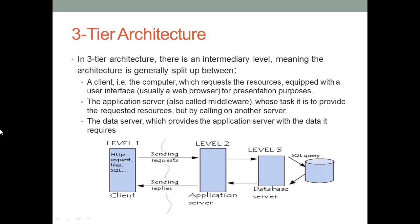In three-tier architecture, all requests from the client — whether SQL queries, HTTP requests, or file uploads — go directly to the middleware server. The middleware server decides whether to query the database. If needed, it sends the request to the database, the database executes the SQL queries, and the response is sent back through the middleware server to the client.